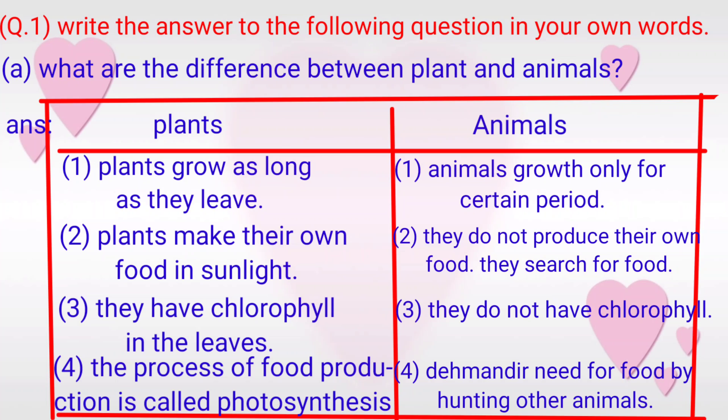Animals: 1. Animals grow only for a certain period. 2. They do not produce their own food; they search for food. 3. They do not have chlorophyll. 4. They meet their need for food by hunting other animals.